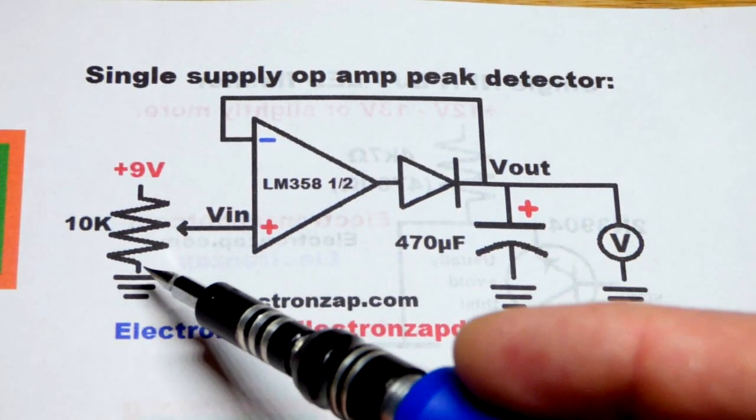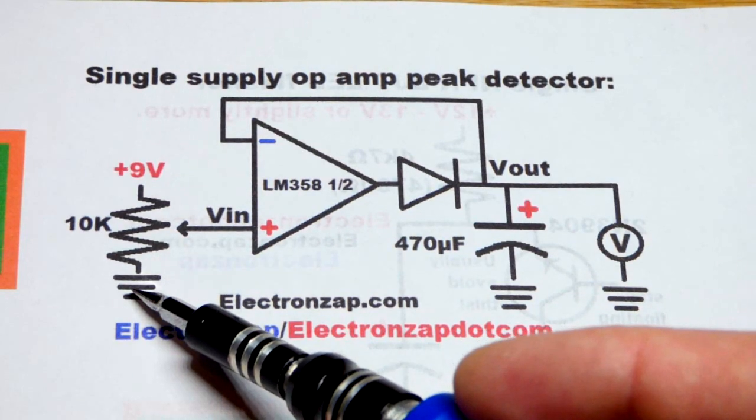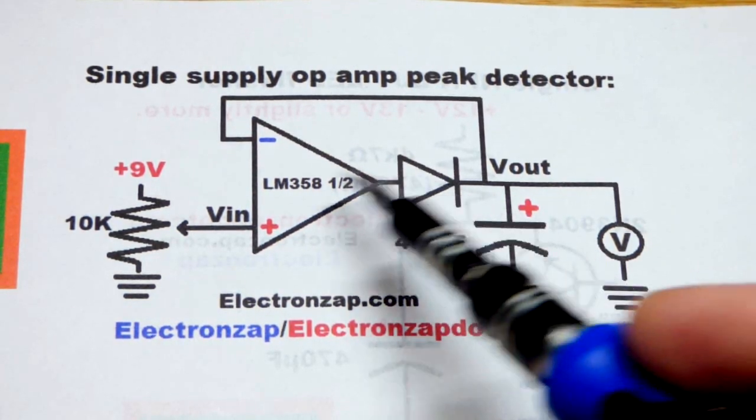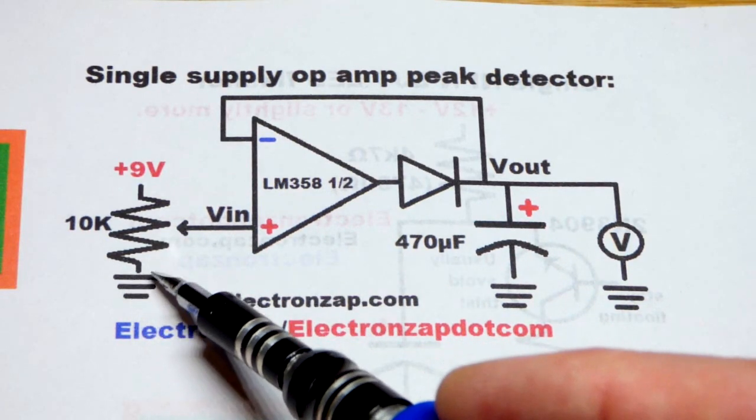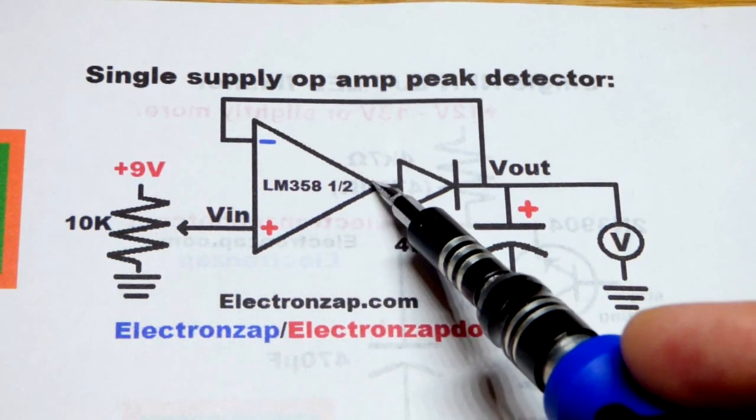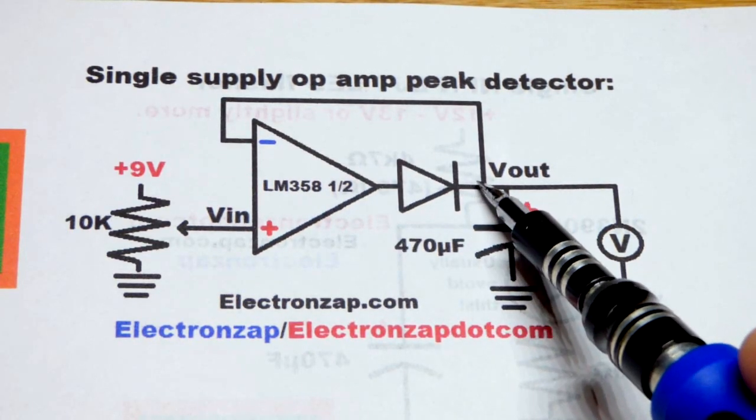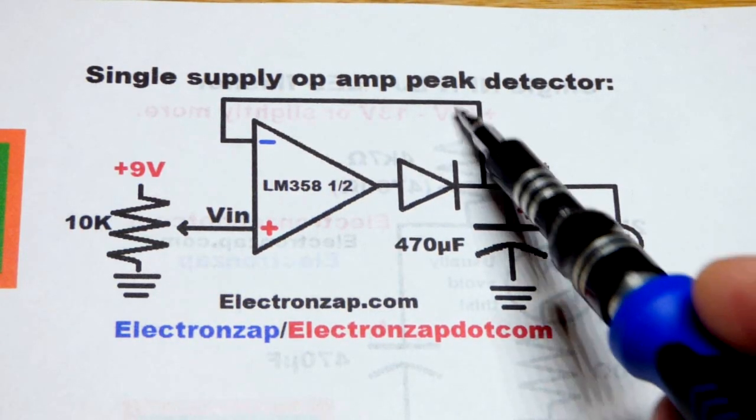So it's a peak detector. That means when we have zero volts at the ground and we have zero volts at the capacitor, everything's zero volts. Then we raise the voltage, let's say to four volts. We're going to have about 4.6 volts here because that's what we're going to need to get about four volts right there.